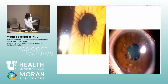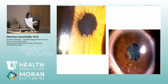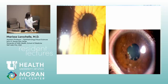Iris margin nodules — Koeppe nodules. Large mutton-fat KPs seen on the corneal endothelium indicate granulomatous disease. Angle nodules in granulomatous uveitis are called Busacca nodules.